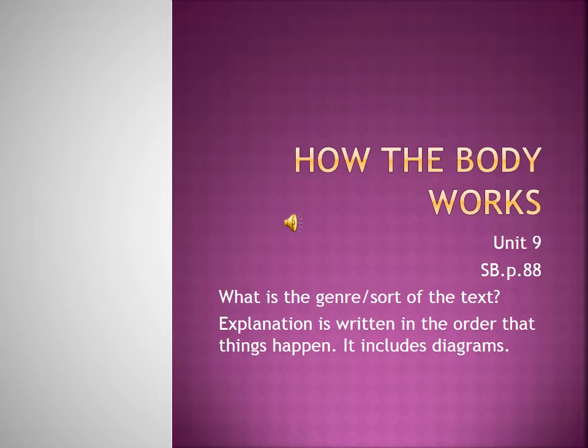As a start, I want you to go to student book page 88. Here we are going to start with a question: what is the genre or sort of the text? Look at the bottom part of the page — you are going to say it is an explanation. Explanation is written in the order that things happen and it includes diagrams. ومعنى الشرح هو شيء مكتوب بالترتيب الذي تحدث فيه الأشياء ويتضمن رسوم بيانية أو تخطيطية.